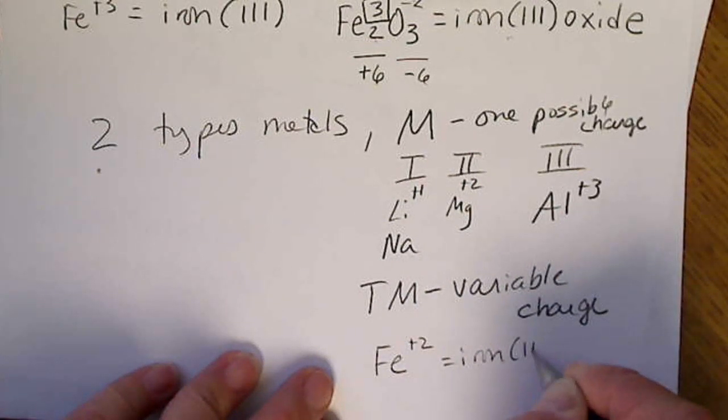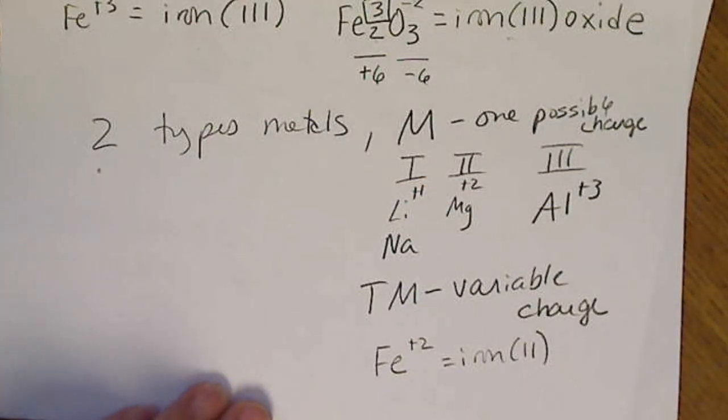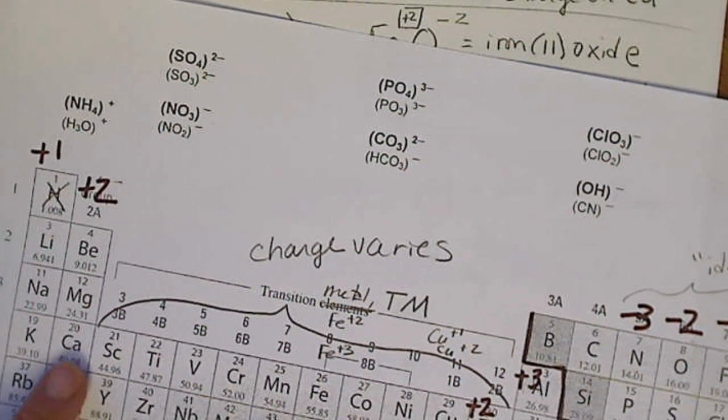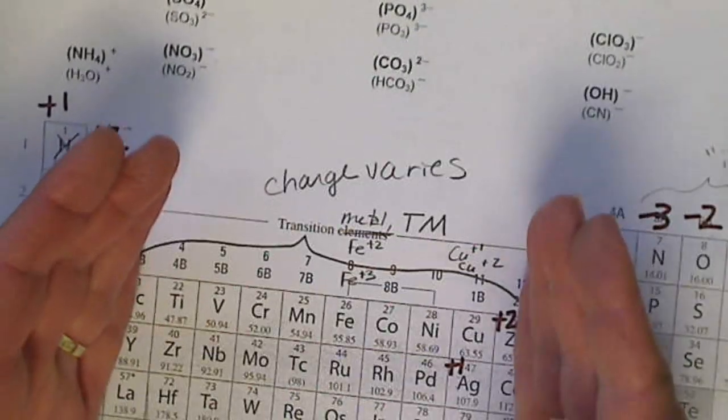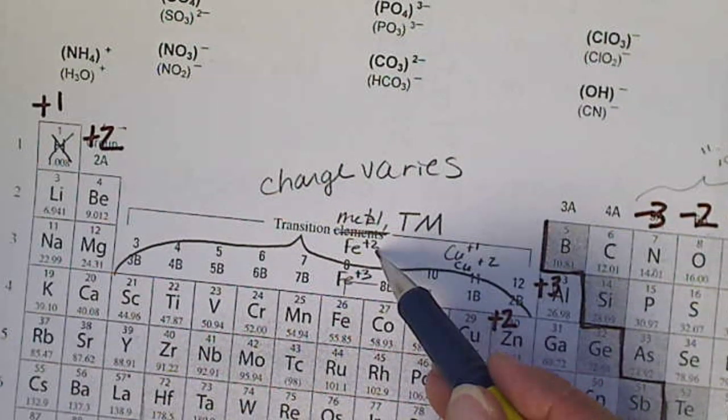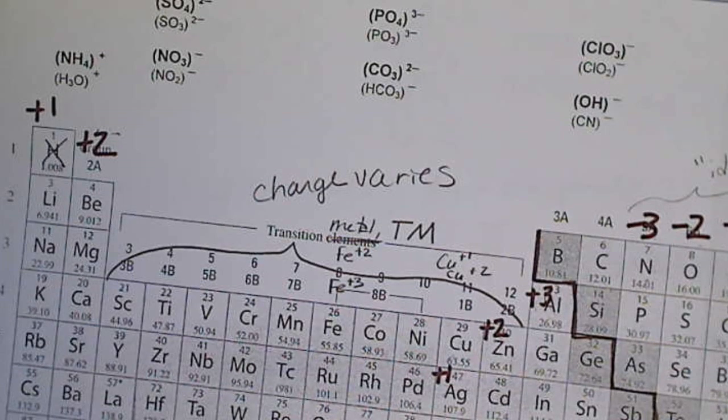So again, this is iron 2. The naming rules, we're going to be able to tell if a metal needs a Roman number by where it is on the periodic table. If I don't have a charge written above it, then we're going to figure out the charge, and the charge will be the Roman number.